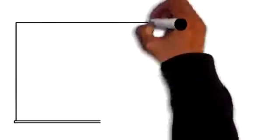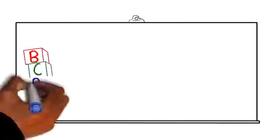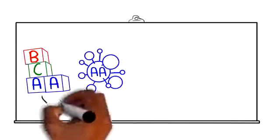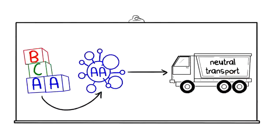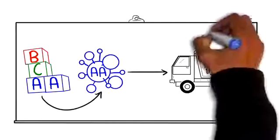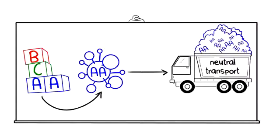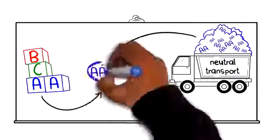You see, most branched-chain amino acid products are made up exclusively from free-form amino acids. Free-form amino acids, while valuable, all use the same neutral transport system. The neutral transport system becomes overloaded, and the overall absorption rate of each amino is dramatically decreased.